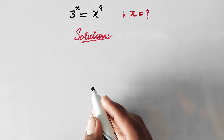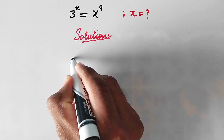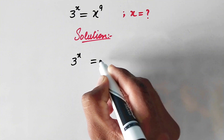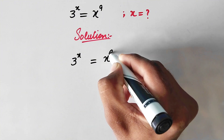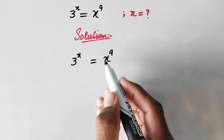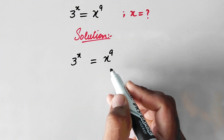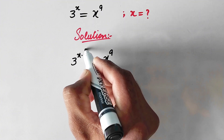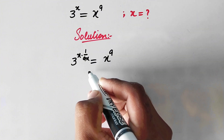In the first step we will rewrite the original equation: 3 to the power x equals x to the power 9. Now we will multiply the powers on both sides with the fraction 1 over 9x.